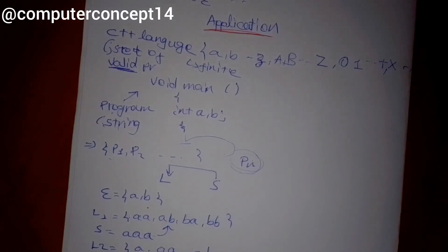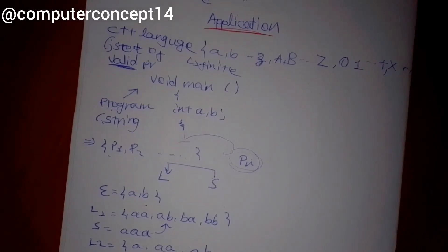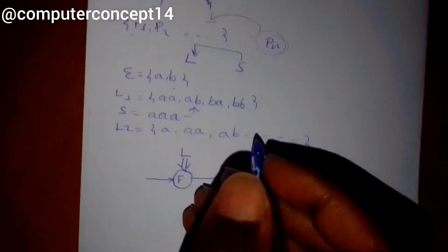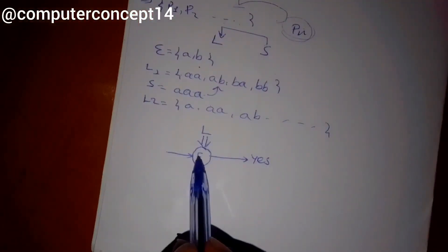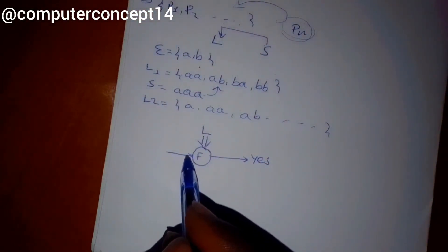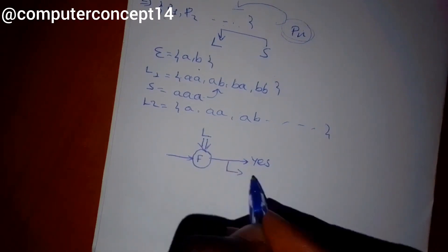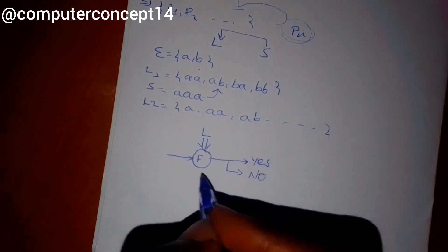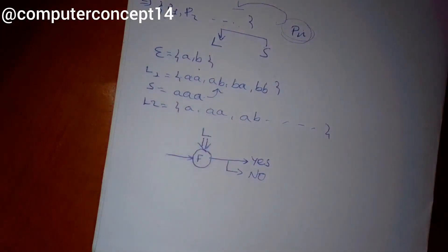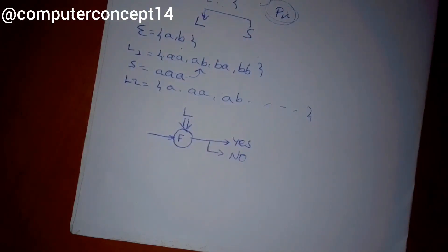This is what we call finite. Given input, this is finite memory — it represents the language. Initially, this is C++. This is what we call finite automata. This is finite automata — simply, to look at the structure.